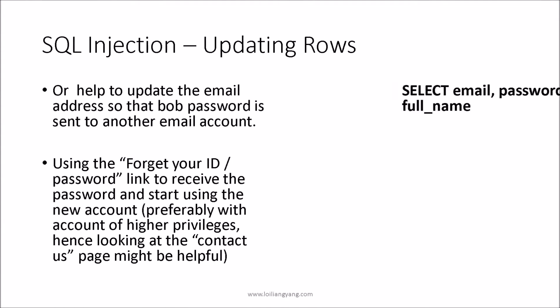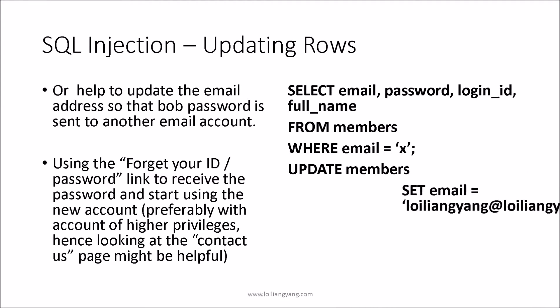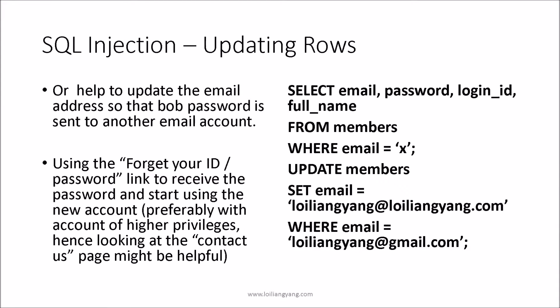Updating rows is a much easier and straightforward process, because you do not need all the column names to execute a SQL UPDATE command — knowing the necessary table names will be sufficient. For example, if we know the email, password, login ID, and full name, we can easily change the email to complete a forgot password request. The forgot password request will then send information to our intended email so that we can set a new password for the user.